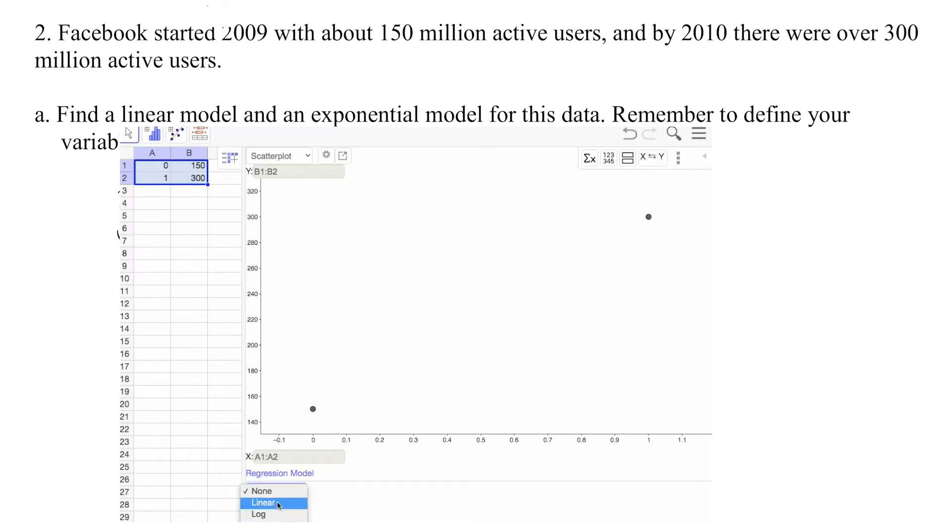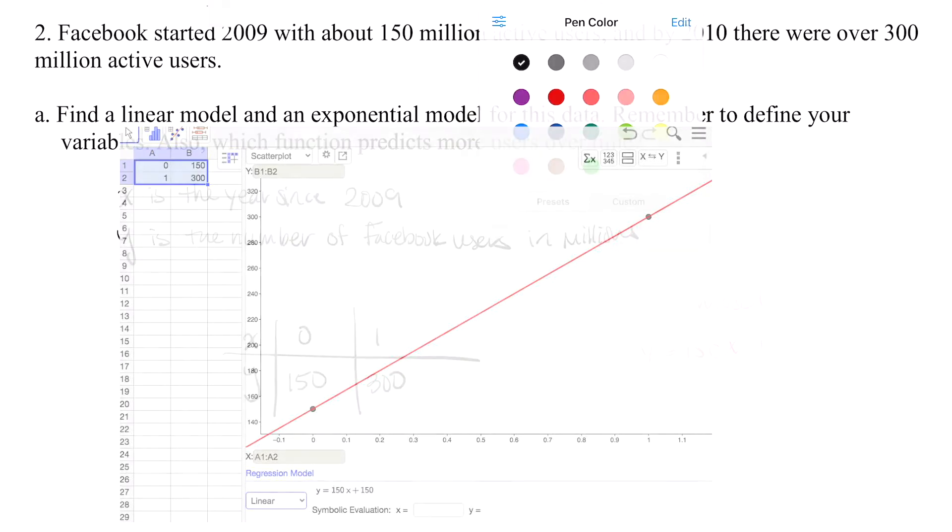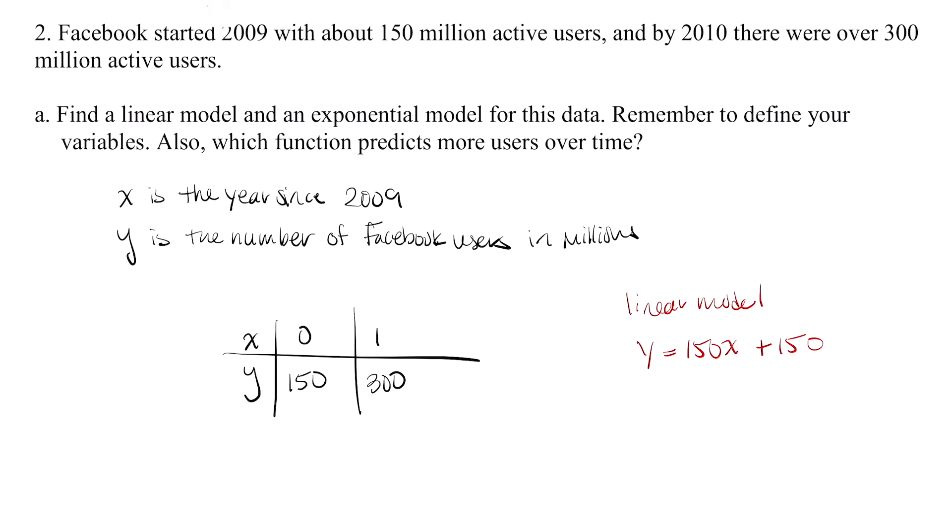It just plotted two points. So our regression model, let's go linear. That gives us the linear model, which I'm going to write down here.